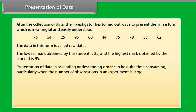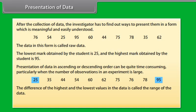Presentation of data in ascending or descending order can be quite time consuming, particularly when the number of observations is large. In ascending order we can clearly see that the lowest marks are 25 and the highest marks are 95. The difference of the highest and the lowest values is called the range of the data. So the range in this case is 95 minus 25 which equals 70.